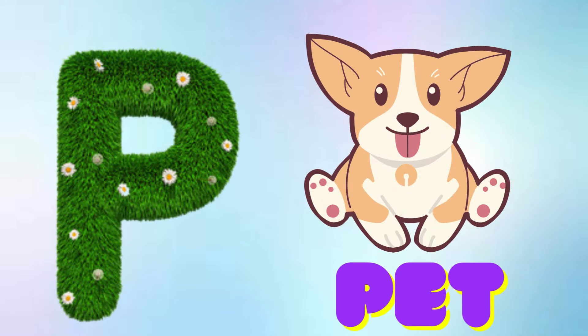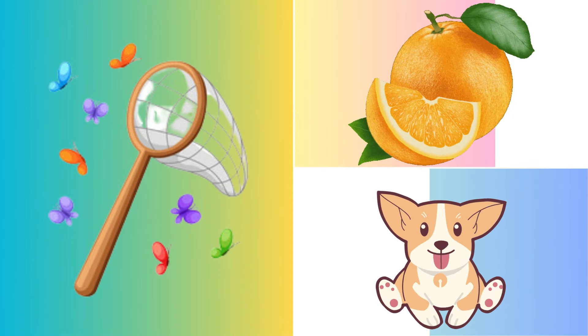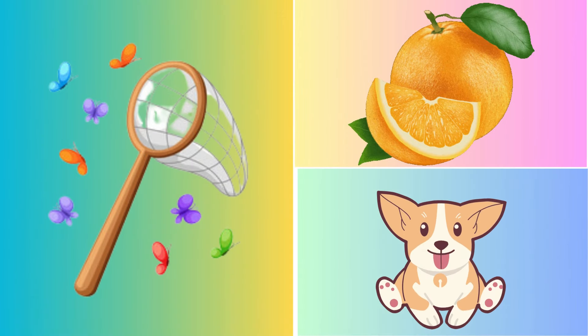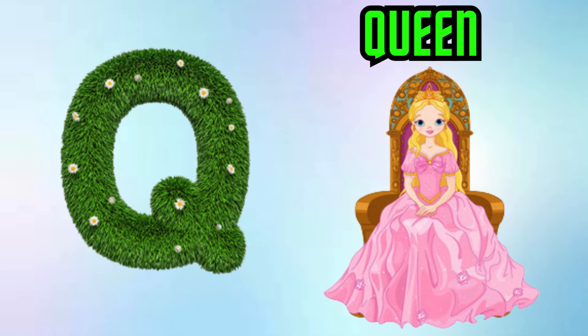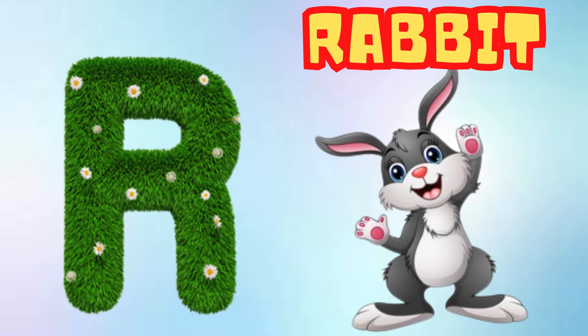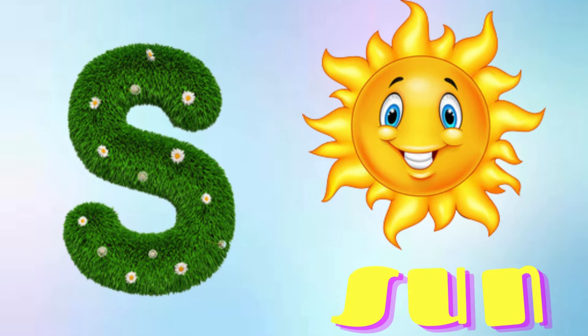P is for Pet, P-P-Pet. Q is for Queen, Q-Q-Queen. R is for Rabbit, R-R-R-Rabbit.